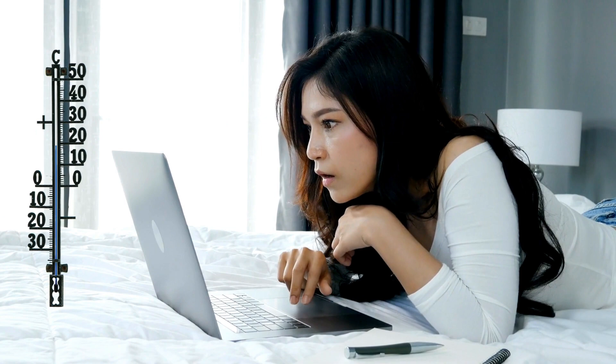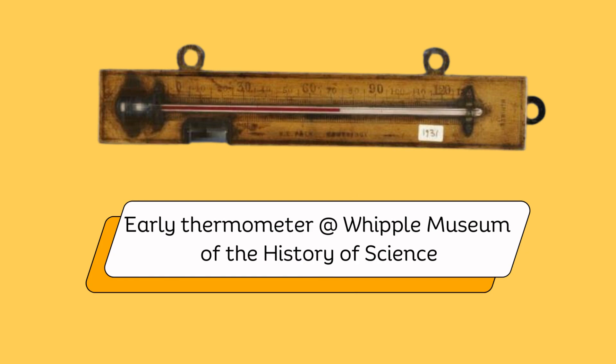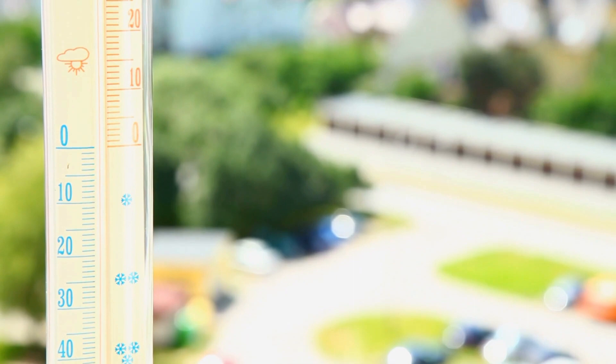You'll be surprised to find out that in the beginning, the Celsius scale had zero degrees Celsius as the boiling point for water, and 100 degrees Celsius was defined as the freezing point of water — completely the opposite of the scale we know and use today. The reason why Celsius created the scale this way was because the thermometer was mostly used to measure temperatures outside, which usually fell between minus 20 and 40 degrees Celsius. By setting 100 degrees Celsius as the freezing point of water, the scale avoided using negative numbers when it was cold outside.